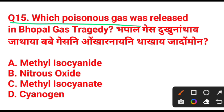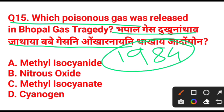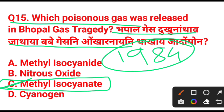Which poisonous gas was released in the Bhopal gas tragedy? The Bhopal gas tragedy — a gas leaked in 1984. The gas that leaked was methyl isocyanate. Option C is the right answer.